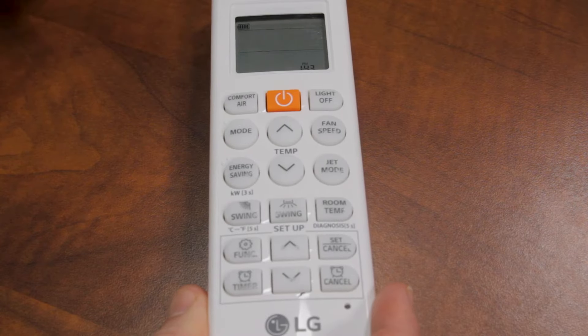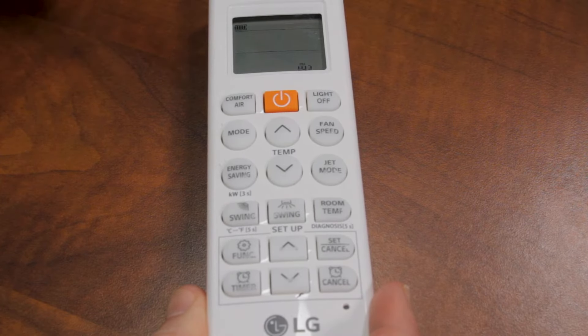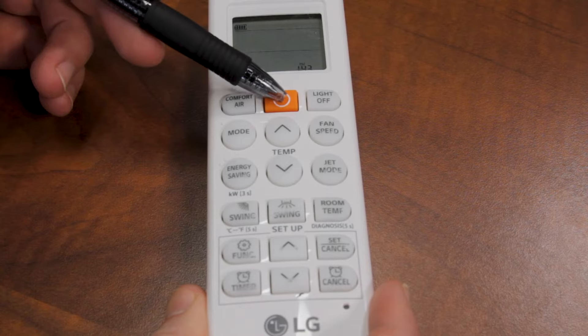One of the first things you're going to do is take the remote and point it at the indoor unit. You're going to press this power button to turn it on.